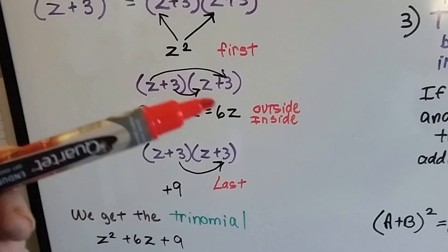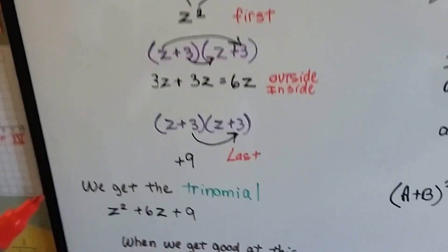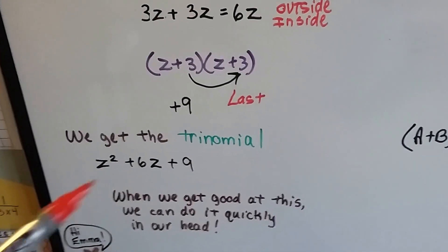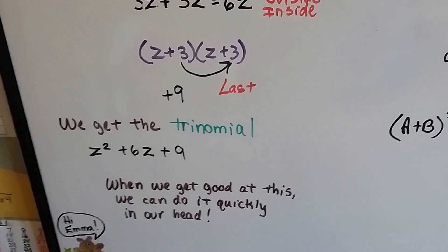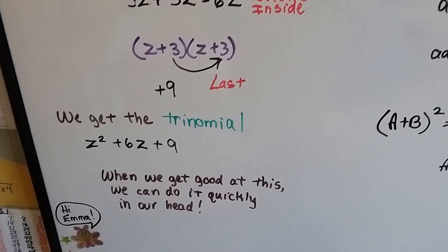So we've got z squared plus 6z plus 9. We get the trinomial z squared plus 6z plus 9. When we get good at this, we can actually do it quickly in our head.